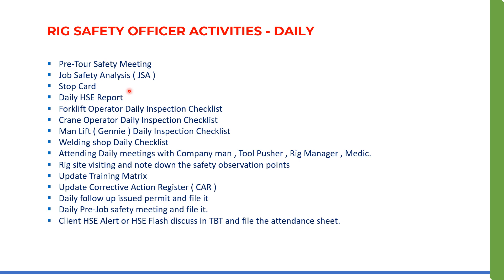The safety officer collects the filled stop cards, records them in the observation records, and also mentions them in the corrective action register. It is the responsibility of the rig safety officer to ensure closure of those observations. Next is the daily HSE report: the rig safety officer sends a daily HSE report to his HSE coordinator and company man. Then the forklift operator daily inspection checklist, which is filled by the forklift operator, and the crane operator daily inspection checklist — also called the pre-use operational checklist.